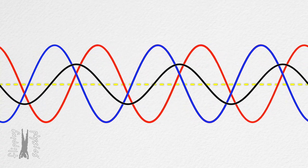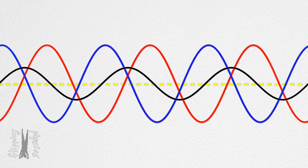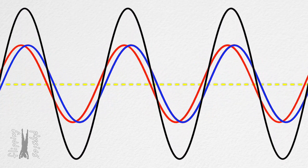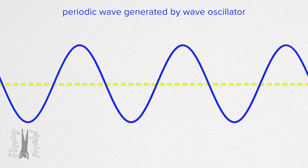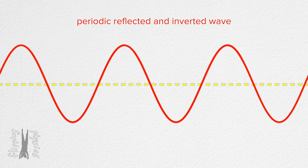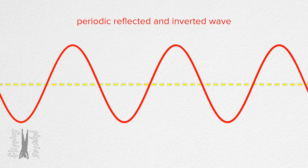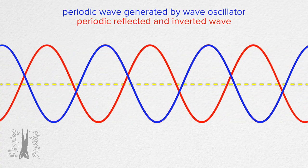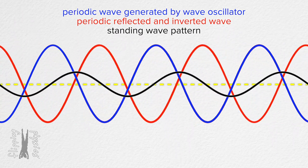I have created this animation to show you the wave patterns which constructively and destructively interfere to create the standing wave patterns. The blue periodic wave is moving to the right and represents the periodic wave being generated by the oscillator. The red wave is moving to the left and represents the periodic wave which is the result of the blue wave being reflected and inverted by the fixed end on the right. But the truth is that neither of those waves exists by itself — what we actually see is the constructive and destructive interference of those two waves creating the black standing wave pattern.